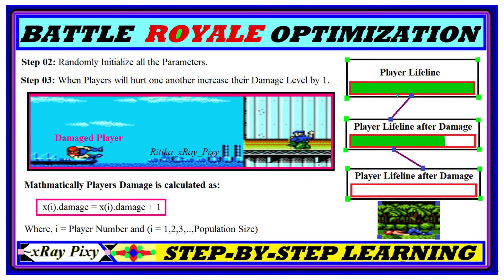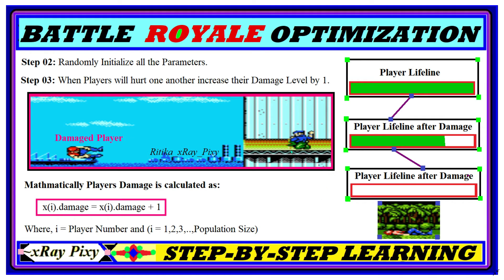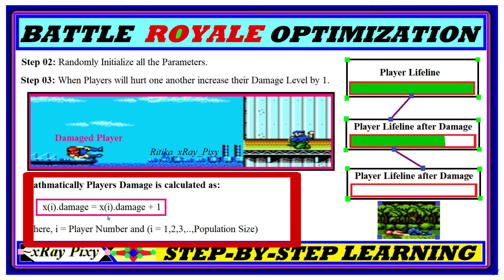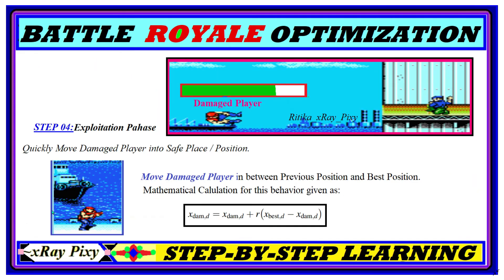The player lifeline before damage is compared to the player lifeline after damage — when the lifeline is empty, the player is considered dead. In step three, when any player hurts another, we increase the damage level by one. Mathematically, player damage is calculated as: x_i = x_i + 1 (incrementing the damage level by one), where i is the player number ranging from 1 to n (population size). Step four is the exploitation phase.